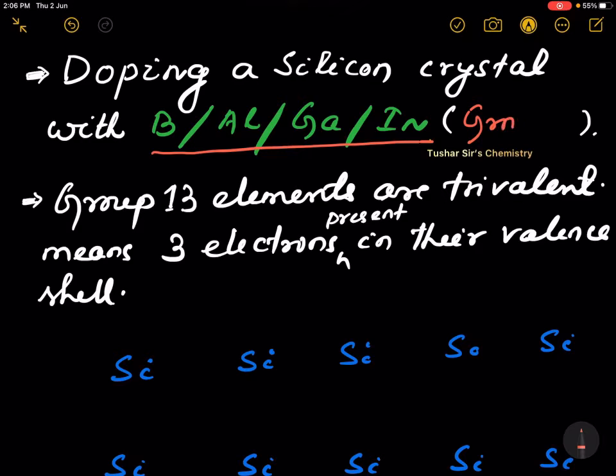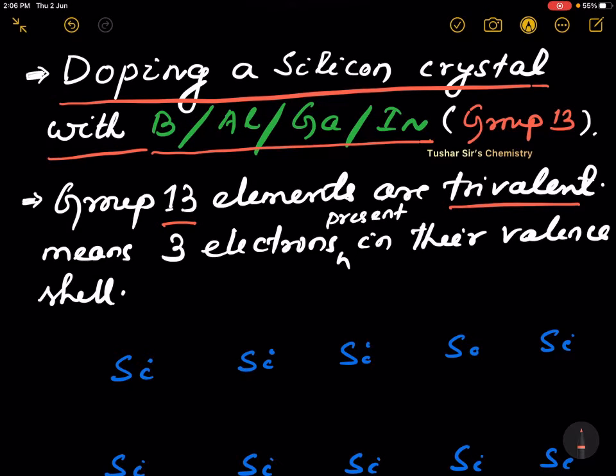These are group 13 elements. Doping a silicon crystal with group 13 elements. Group 13 elements are trivalent. Why? Because they have three electrons in their valence shells.